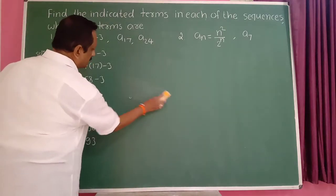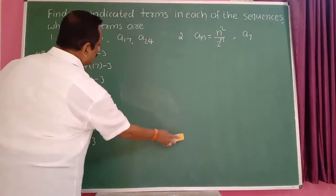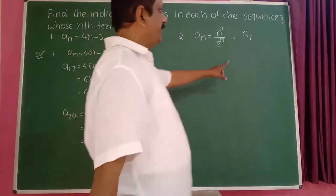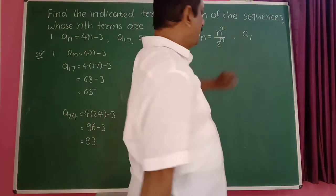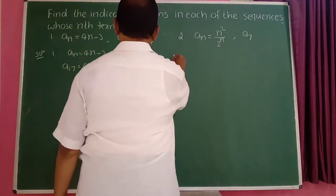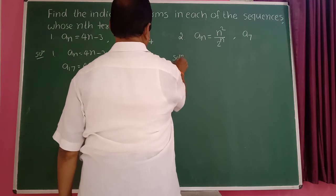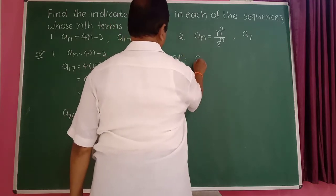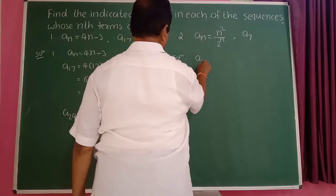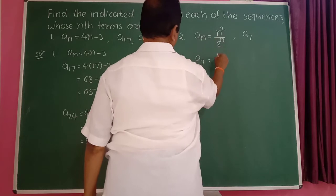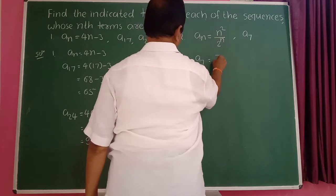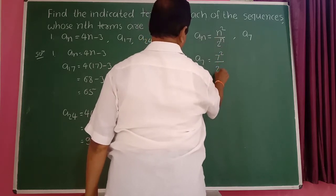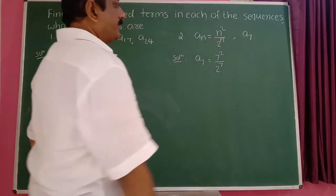This is our first example. In the second example, find the 7th term. So a_7, put n value 7. So 7 squared divided by 2 raised to 7.